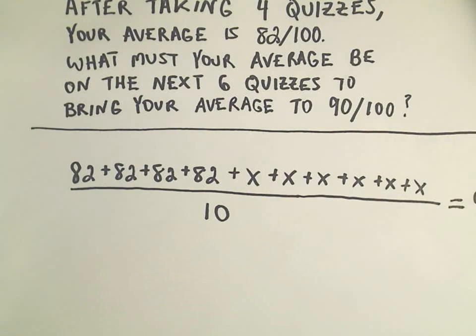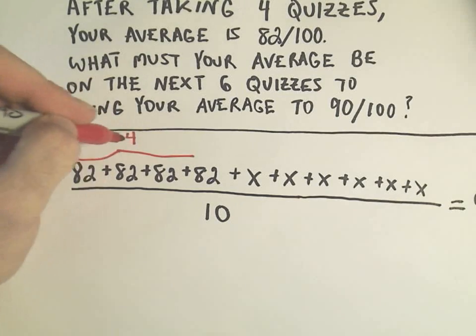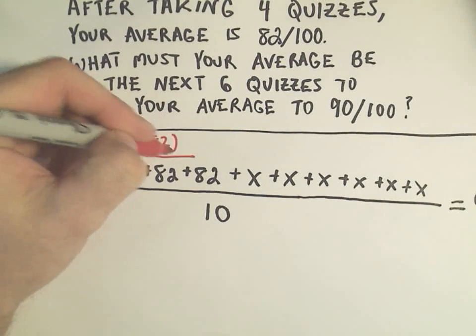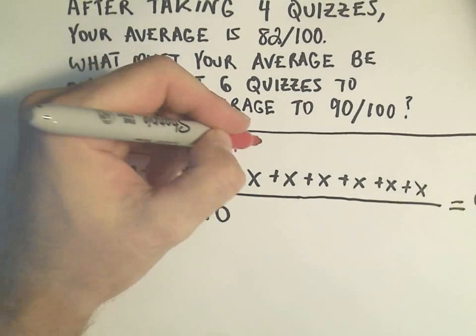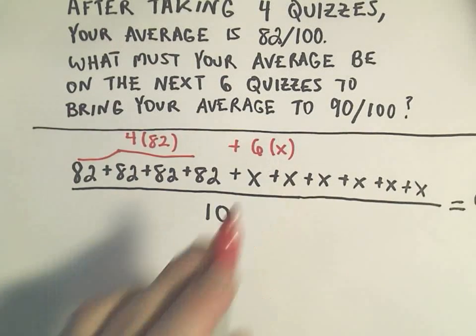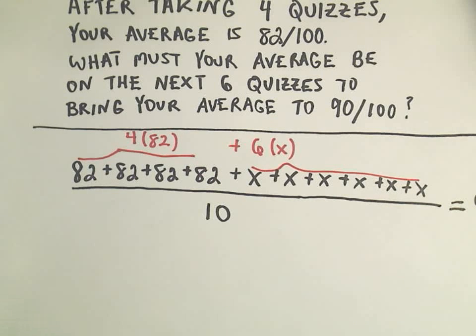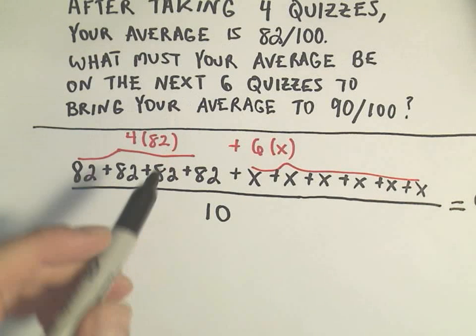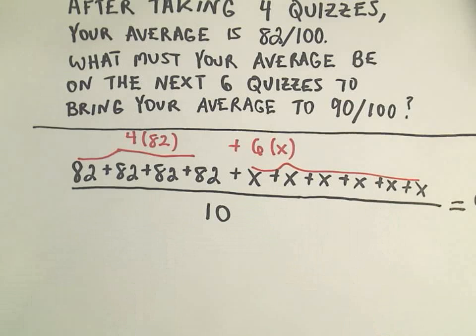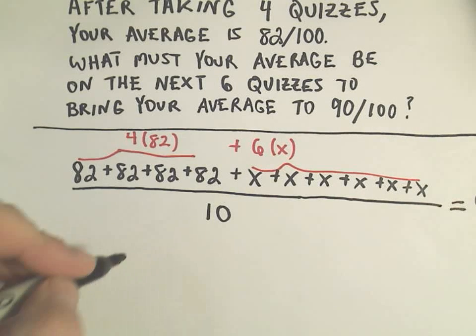So certainly in the numerator, you don't have to write all this out. Now, we could have said you've got four quizzes at 82 each plus another six quizzes that you scored x points on each. So I'm just combining my two terms here in the numerator. Maybe you took a hundred quizzes. You obviously wouldn't want to write all of these individual values out. So you made four 82s and you've got six quizzes left at we don't know how many points. That's what we're trying to figure out.